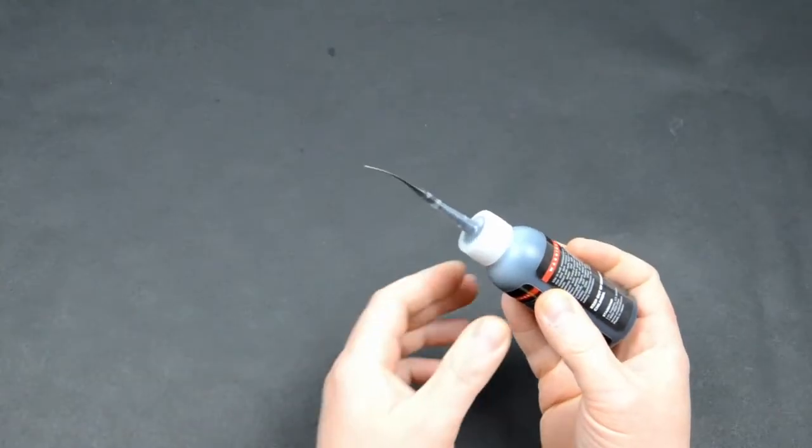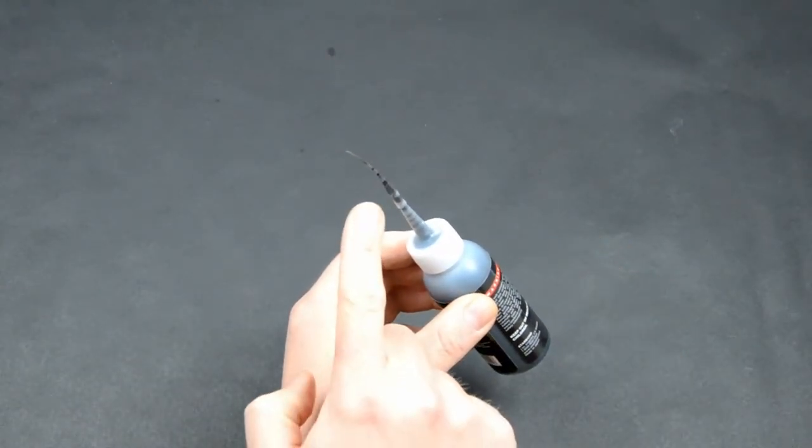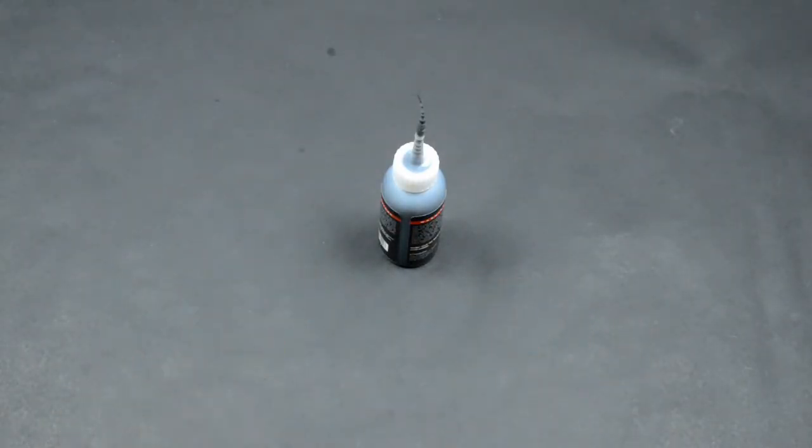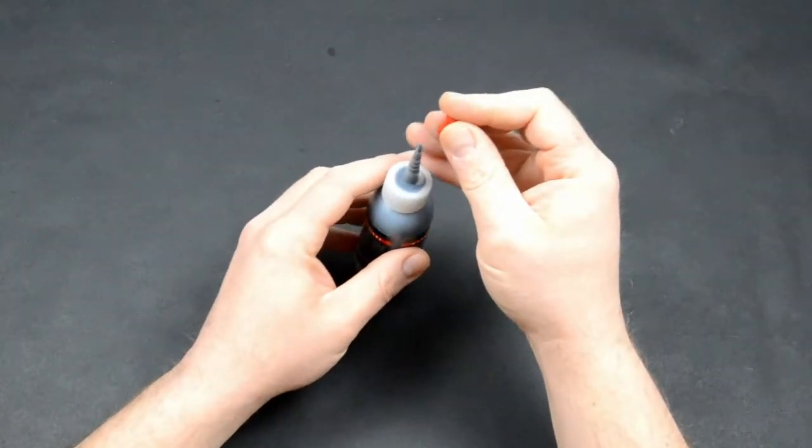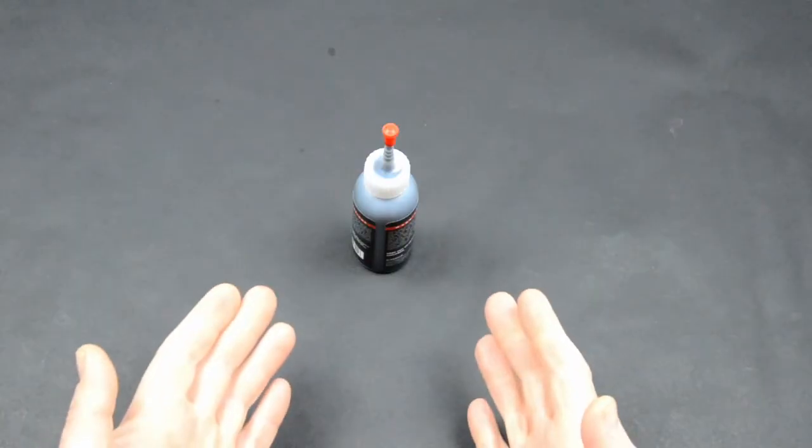When you are done with gluing, you can see how the glue retracts by itself almost immediately. So you can leave your glue like this on your table for days. If you are not so sure, you can cover it with the red cover. I have them like this in the drawer. No fridge storage needed.